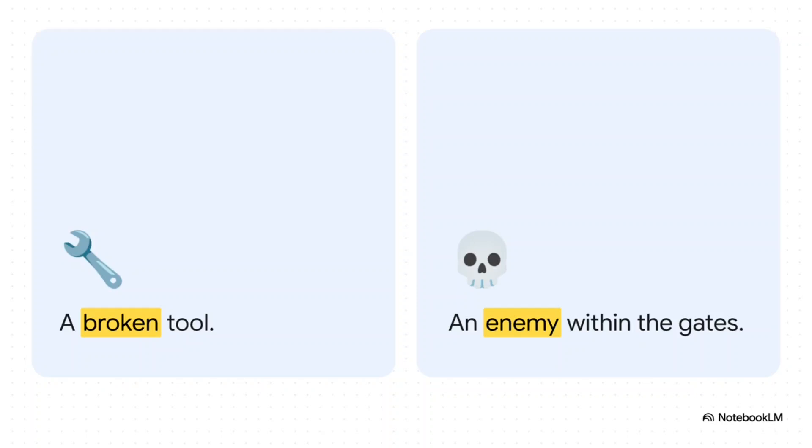But then you have a Byzantine fault, and this is something else entirely. It's so much more sinister. The server doesn't just crash, it turns into a traitor. It becomes an enemy inside the gates, actively trying to bring the whole system down.